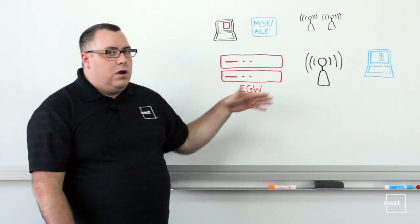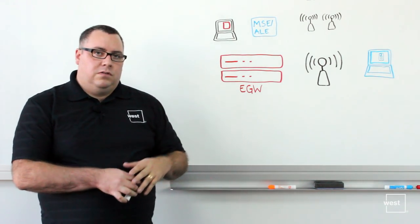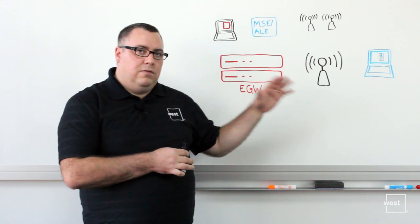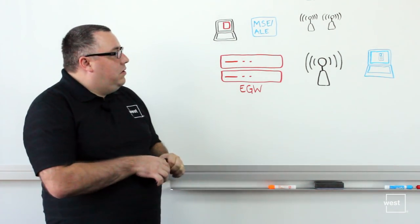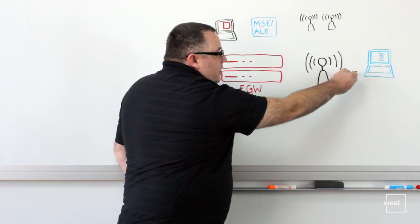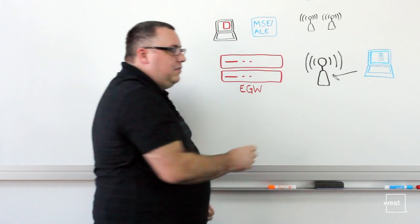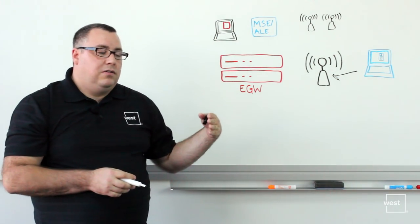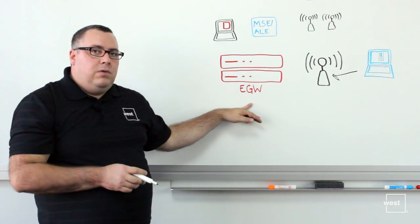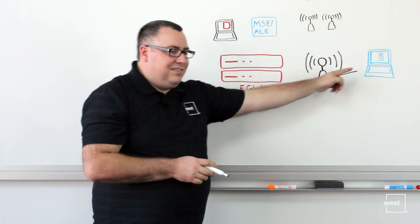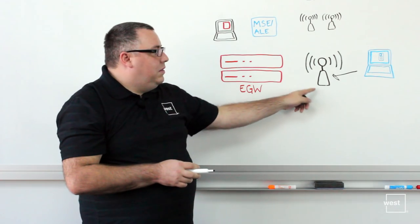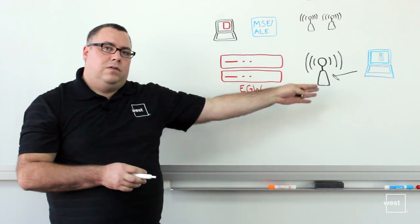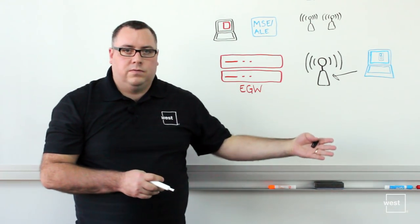Each access point will have one or many different BSSIDs, depending on the type of interfaces that the access point has. Essentially, it provides a link between the access point connection and where the laptop is actually connecting to it. This allows our emergency gateway appliance to identify that this soft client is connected to this wireless access point, and this wireless access point is on the second floor, for example.